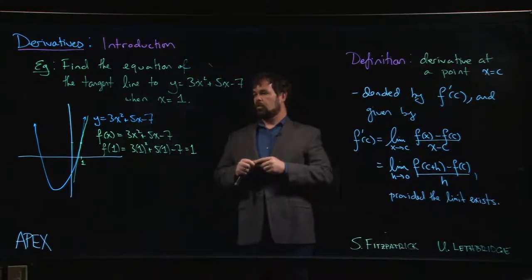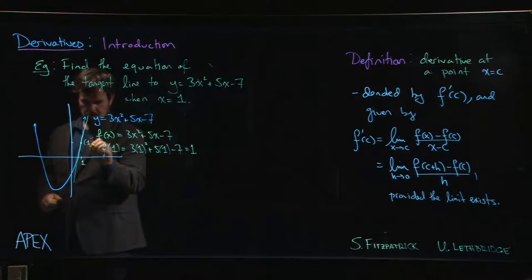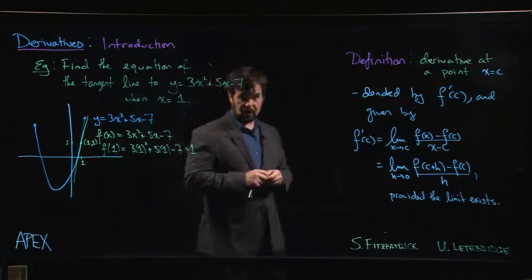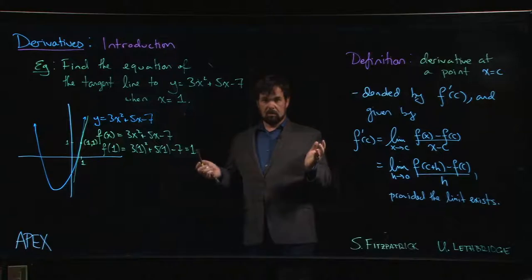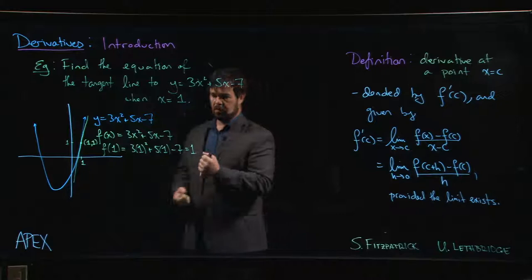So we know that the line is through the point (1, 1), and that's one piece of information we need to get the equation of a line. The other piece we need is the slope. So what do we know about the slope?